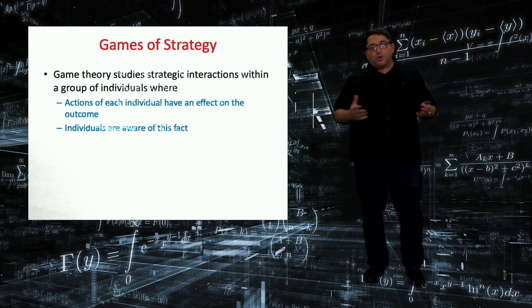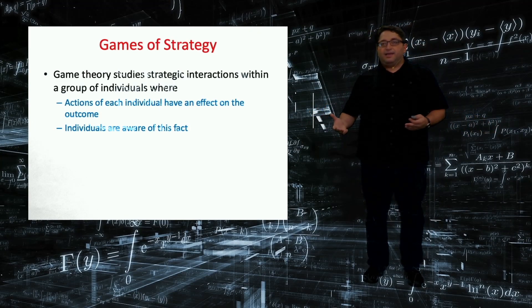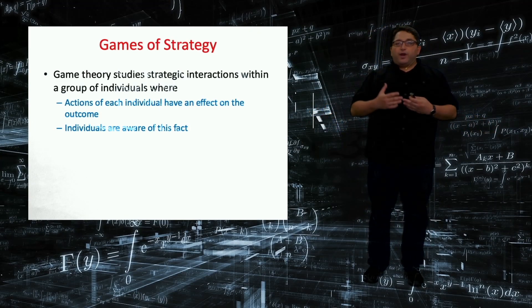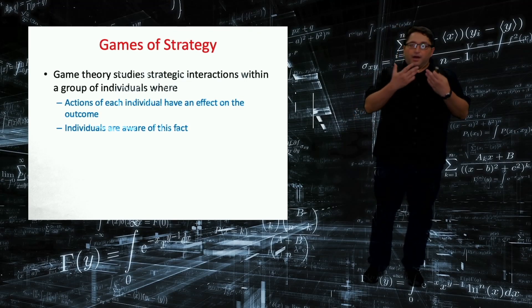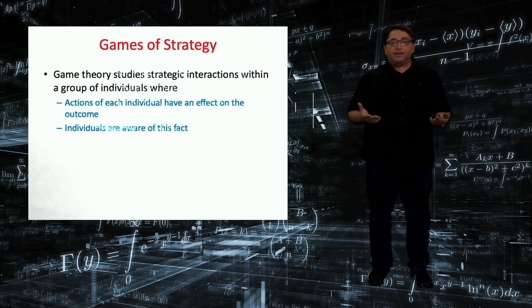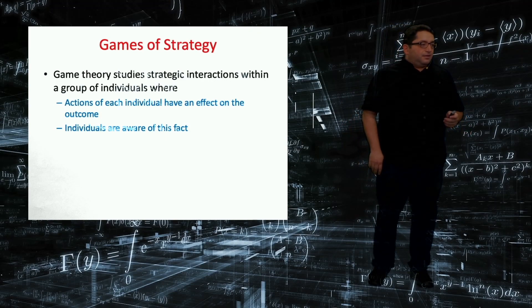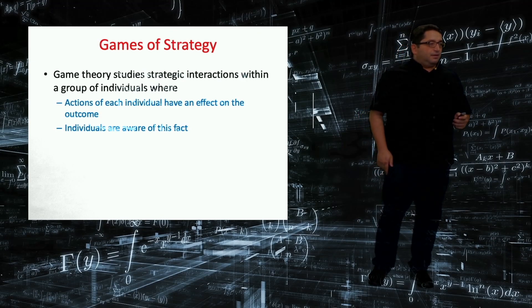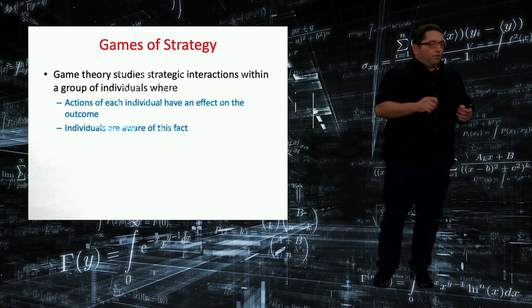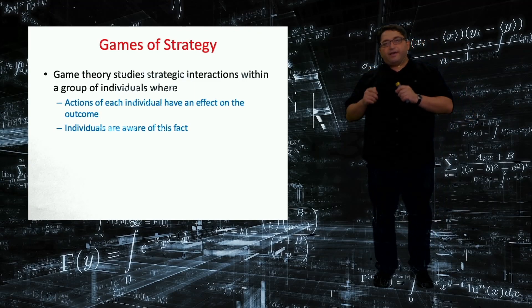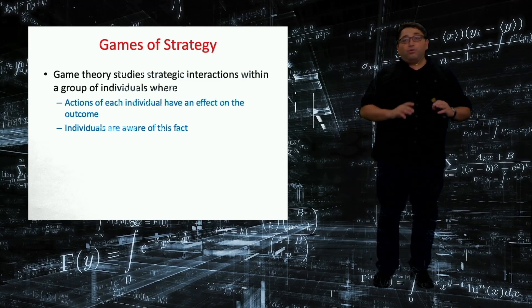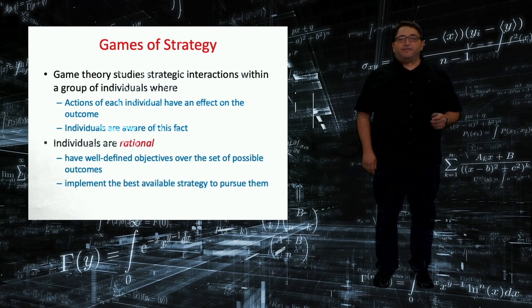What we study, what we use game theory for, are the games of strategy, where we are talking about a multiplayer game and the outcome of the game depends not only on my action but also actions of other players. So think about it as a chess game. There are three possible outcomes: win, loss, or tie. And let's say as a white player, the outcome that I am going to end up with does not only depend on my actions but also black player's action. So these are the games that we will be studying. Actions of each individual have an effect on the outcome and all the individuals are aware of this fact.